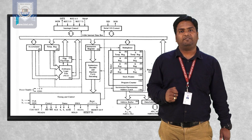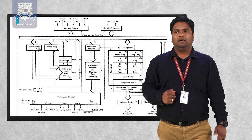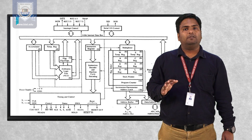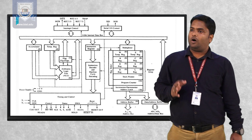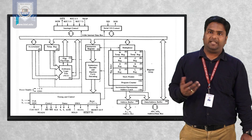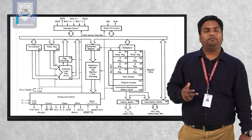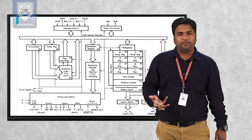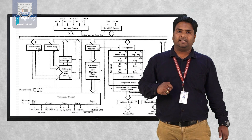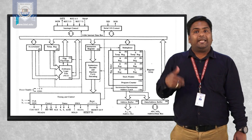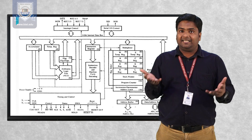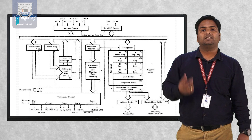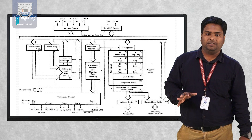In the 8085 microprocessor, a total of 14 registers are used. Out of these, 12 registers are of 8 bits and two registers are of 16 bits. The reason registers are 8 bits is because 8085 is an 8-bit microprocessor, meaning the data required to store information is of 8 bits. That's why the registers used are 8-bit registers.